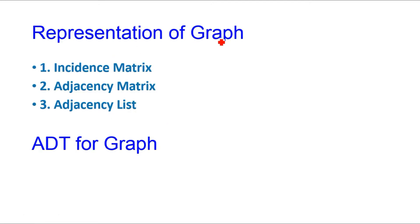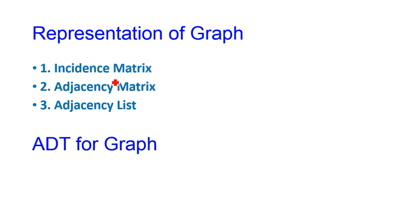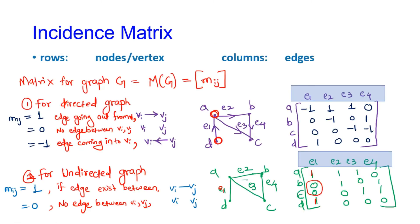We are going to learn about different representations of a graph such as incidence matrix, adjacency matrix, and adjacency list. We are also going to learn about what is the ADT, abstract data type, for a graph. Now let's see the representation of graph one by one.